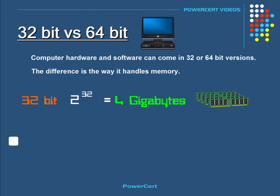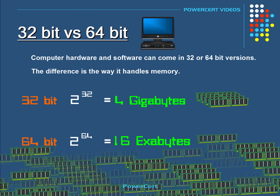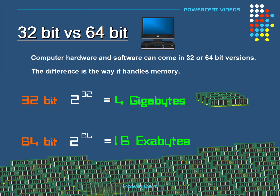However, a 64-bit system can reference 2 to the 64th power bytes of memory, which equals about 16 exabytes, which is 4 billion times more memory than a 32-bit. That number is so huge that it's virtually unlimited, because we will never need to use that amount of memory.